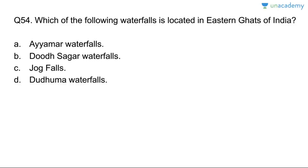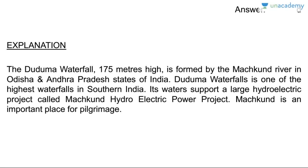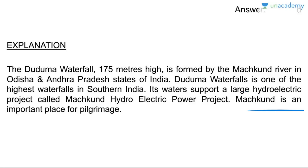Question fifty-four: which waterfall is located in the Eastern Ghats of India? Duduma Waterfalls on the Machkund River in Odisha and Andhra Pradesh — one of the highest waterfalls in southern India. Its waters support the Machkund Hydroelectric Power Project. Machkund is also a very important pilgrimage site. Answer is D.